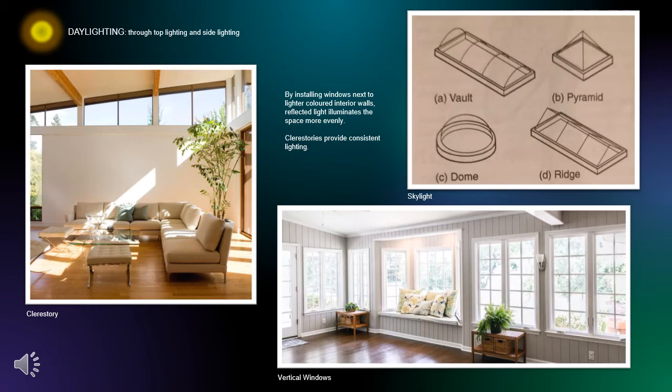Clerestory and skylights are examples of top lighting, while vertical and horizontal windows are examples of side lighting. They allow the daylight to illuminate the space.